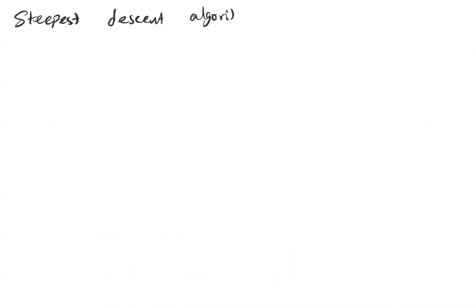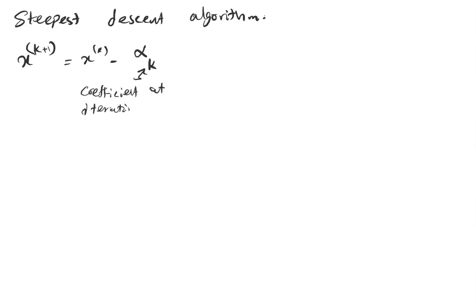The next algorithm we want to discuss is steepest descent. For gradient descent, alpha — that coefficient — was constant. But for steepest descent, the update is: x at iteration k+1 is x at iteration k minus alpha_k, where this coefficient changes at each iteration, multiplied by the gradient of f evaluated at x at iteration k.